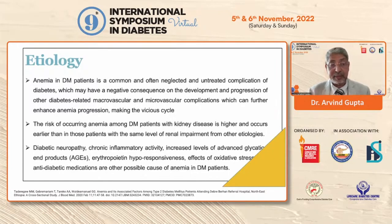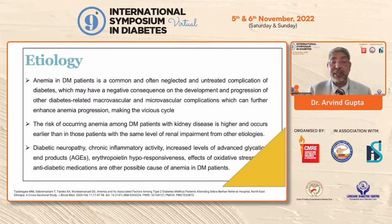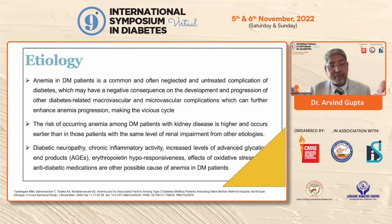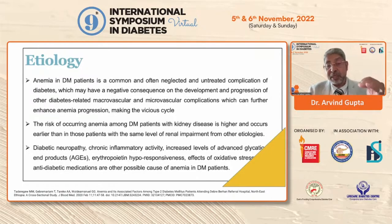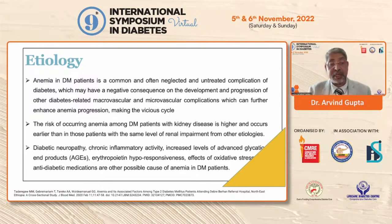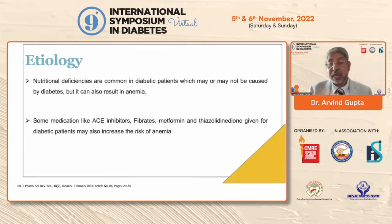The risk of anemia among diabetes patients with kidney disease is high and it occurs early in those patients with the same level of renal impairment compared to other etiologies. There are several causes — diabetic neuropathy, chronic inflammatory activity, increased levels of advanced glycated end products, age, erythropoietin hyporesponsiveness. Not only is the production of erythropoietin reduced, but there is also hyporesponsiveness in diabetes patients. Effects of oxidative stress and anti-diabetic medications are also important contributors.